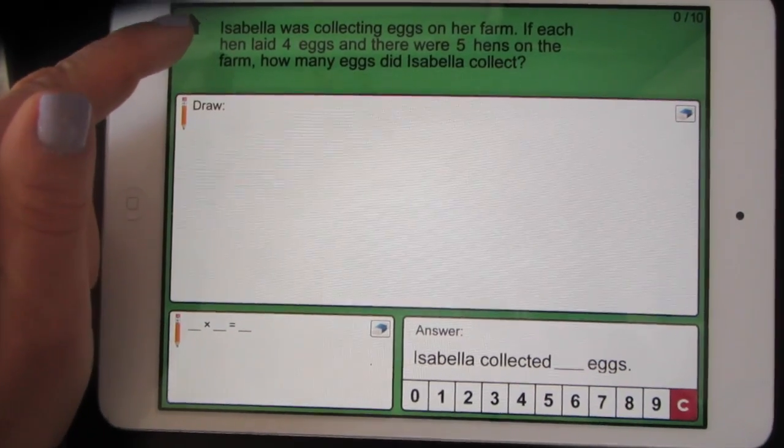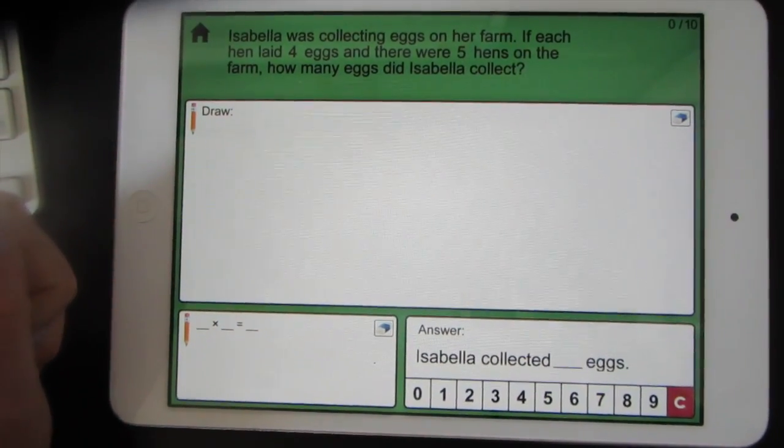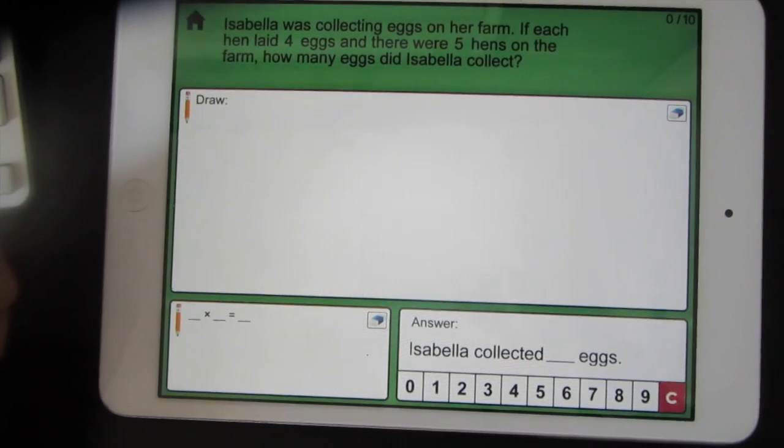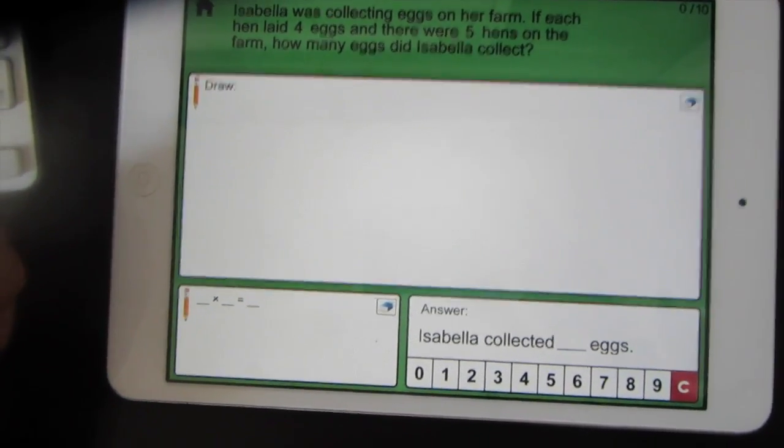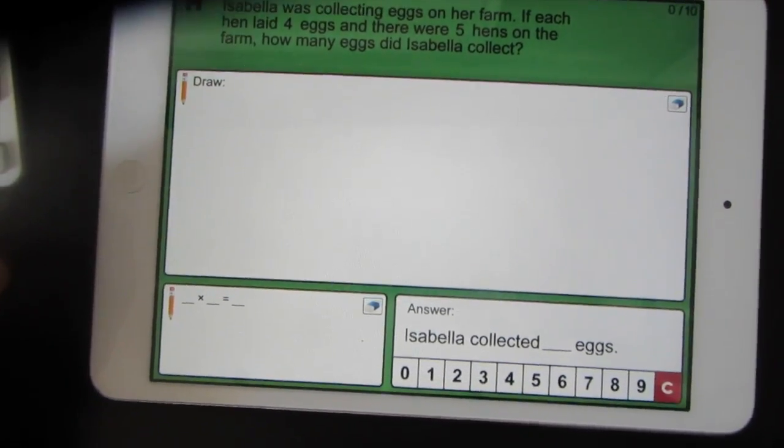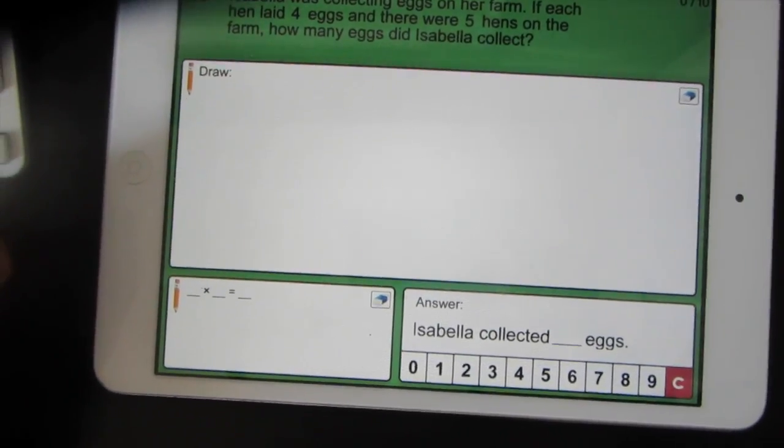The question will appear at the top. Isabella was collecting eggs on her farm. If each hen laid four eggs and there were five hens on the farm, how many eggs did Isabella collect?